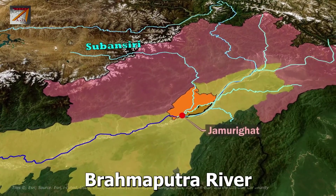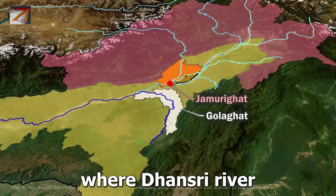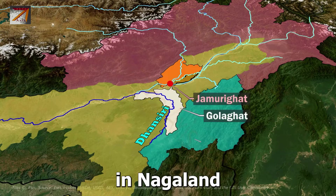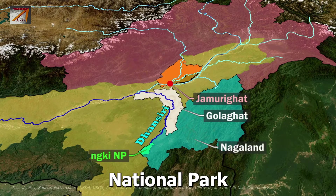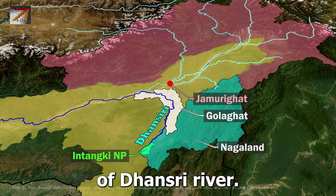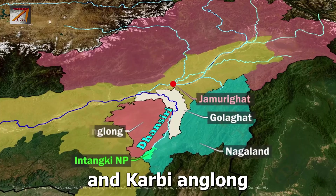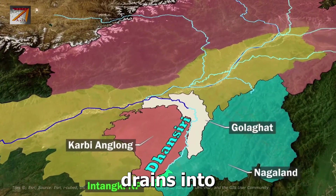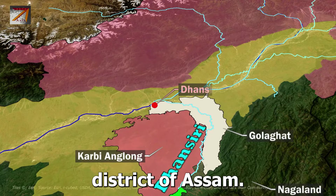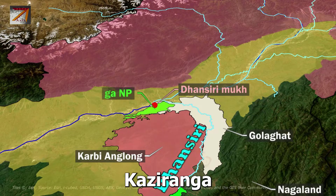From Lakhimpur, the Brahmaputra flows into Golaghat district of Assam, where the Dhansiri River meets it. The Dhansiri River originates in Nagaland, and Intanki National Park is located on its banks. The Dhansiri forms the boundary between Nagaland and Karbi Anglong, and drains into Brahmaputra at Dhansiri Mukh in Golaghat district, just before Kaziranga National Park.